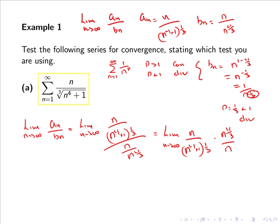Now if we take this limit here, considering the highest powers of n, we can see that this limit will evaluate to 1. So we obtain a finite and positive answer for the limit of a_n over b_n.